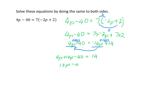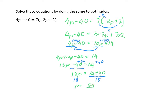So 18p minus 40 is equal to 14. Now I apply my inverse operations to get p by itself. First, I want to get rid of minus 40 — the opposite is plus 40 — so I add 40 to both sides: 18p is equal to 14 plus 40, which is 54. The last inverse operation is to get rid of the 18 times p by dividing both sides by 18, so p is equal to 54 divided by 18, which is 3.